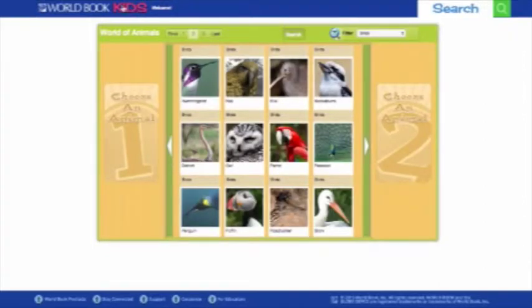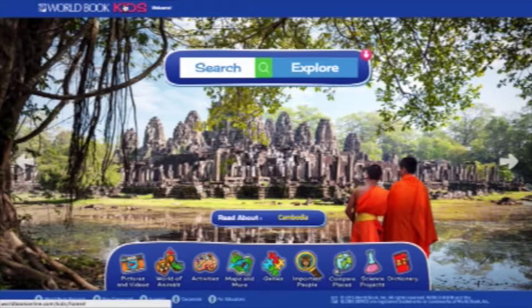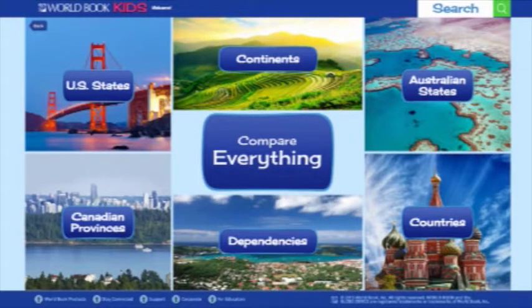Now let's go back to the home page and jump into Compare Places briefly, which is a great way for kids to explore countries and continents. It works just like Compare Animals, except this time users can compare states, provinces, countries, continents, or choose Compare Everything to compare across categories.